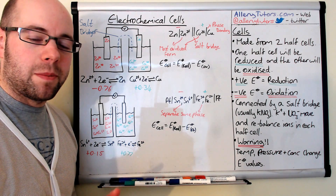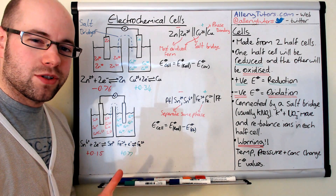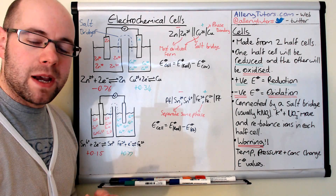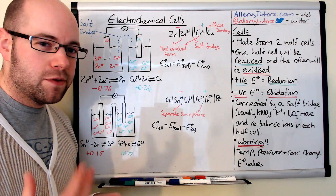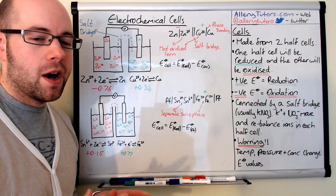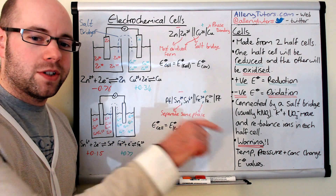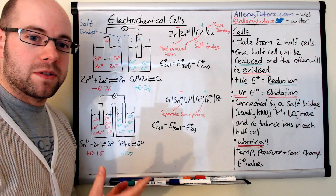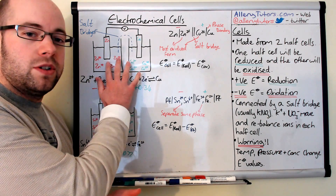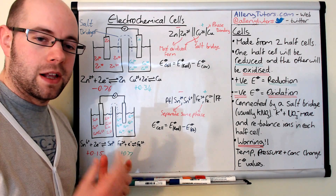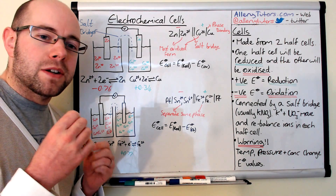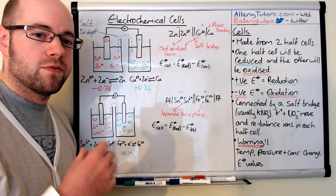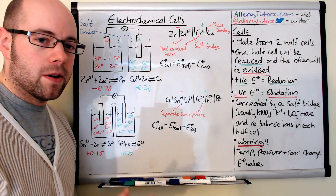We're going to start by looking at how we can construct electrochemical cells, and they're basically made up from two half cells. If you don't know what a half cell is, there's a video on half cells — just click on the link below. What happens is one of the half cells will be reduced and the other one will be oxidised.